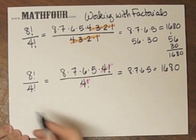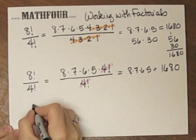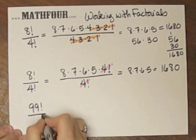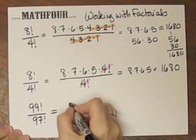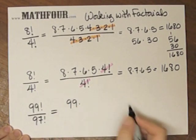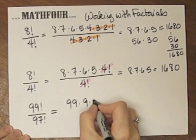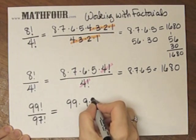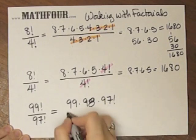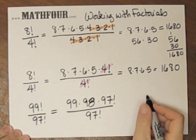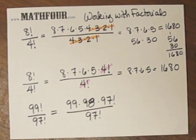This is very helpful when we get to things like 99 factorial over 97 factorial. I do not want to have to write out 99 factorial, but I can write 99 times 98, let me write it right, times 97 factorial over 97 factorial. And then those guys cancel.